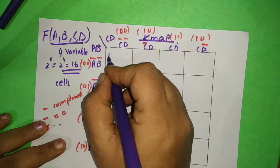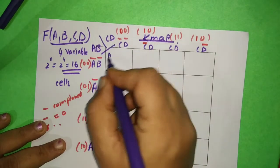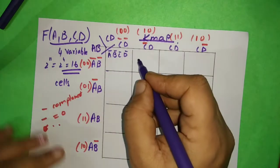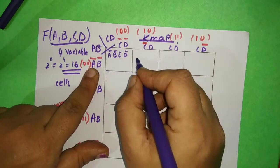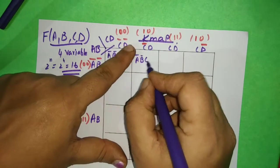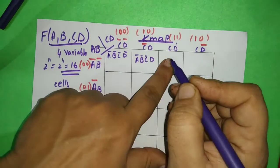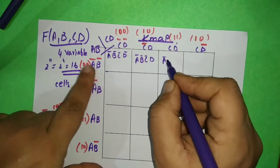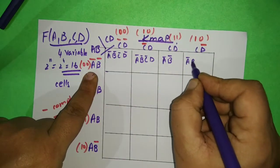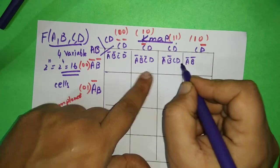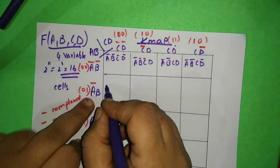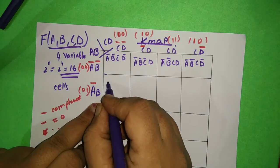Now we have to cross-multiply the row and column names for each cell. So it is: A complement, B complement, C complement, D complement — then A complement, B complement, C complement, D — then A complement, B complement, C, D. What is on the top, that we have to write: C, D and C, D complement. We have to do this for all the cells.